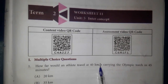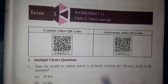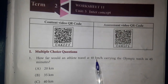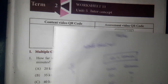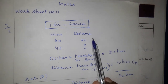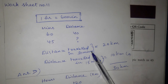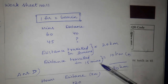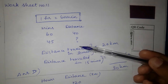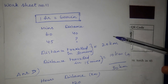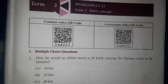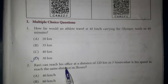How far would an athlete travel at 40 km per hour carrying the Olympic torch in 45 minutes? We will get the speed of 40 km per hour. 1 hour is equal to 60 minutes. For 60 minutes we get 40 km. For 30 minutes we have 20 km. For 45 minutes the answer is 30 km. Answer: option D.